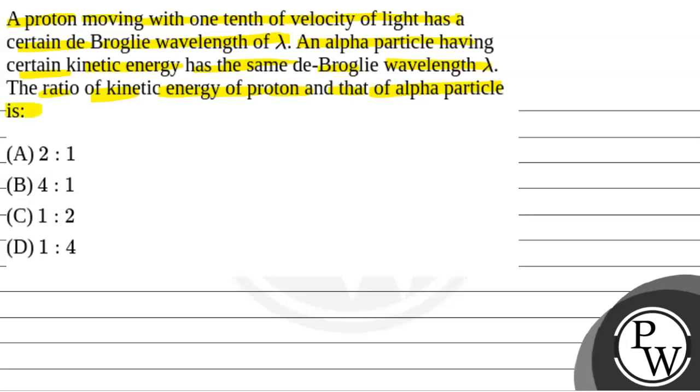So we will solve this question. First, we will see the key concept. The key concept is lambda, the de Broglie wavelength, equals h by p, where h is Planck's constant and p is momentum. Kinetic energy KE equals p squared by 2m, where p is momentum and m is the mass of the particle.